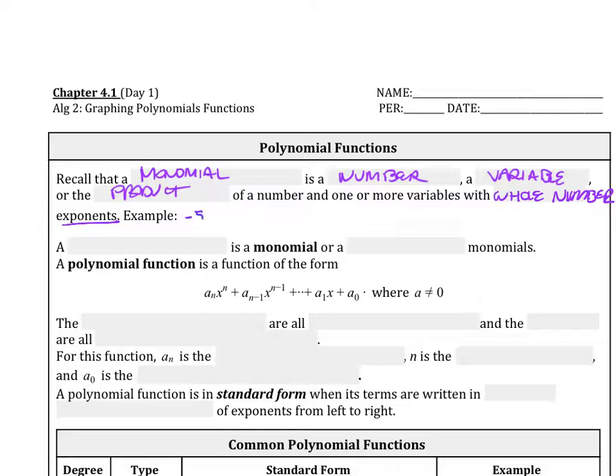So for example, we could have negative 5, that's a monomial. We could have 3x to the 5th, we could have 1 half x squared, we could have the square root of 5 times xy cubed. Those are all examples of monomials.